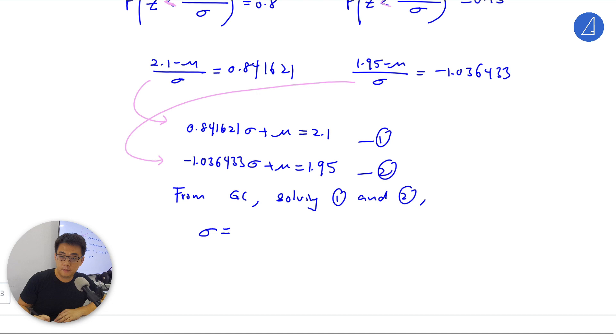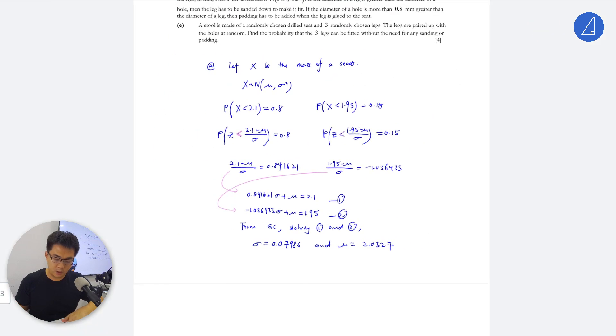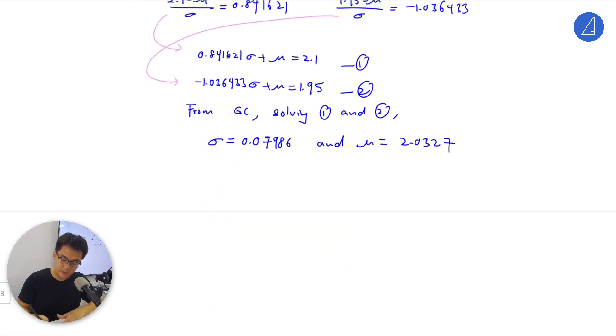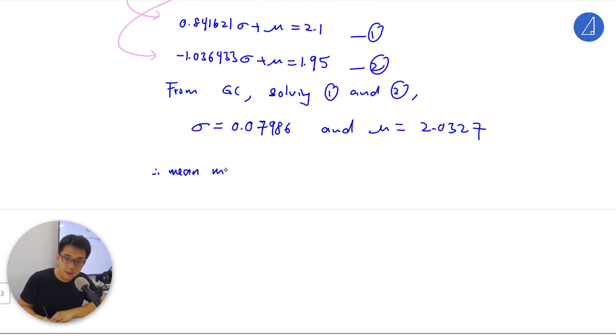Sigma equals 0.07986 and mu equals 2.0327. They asked us to show correct to 3 significant figures, so we managed to show it. Mean mass of a seat equals 2.03 kg, and sigma equals 0.0799.